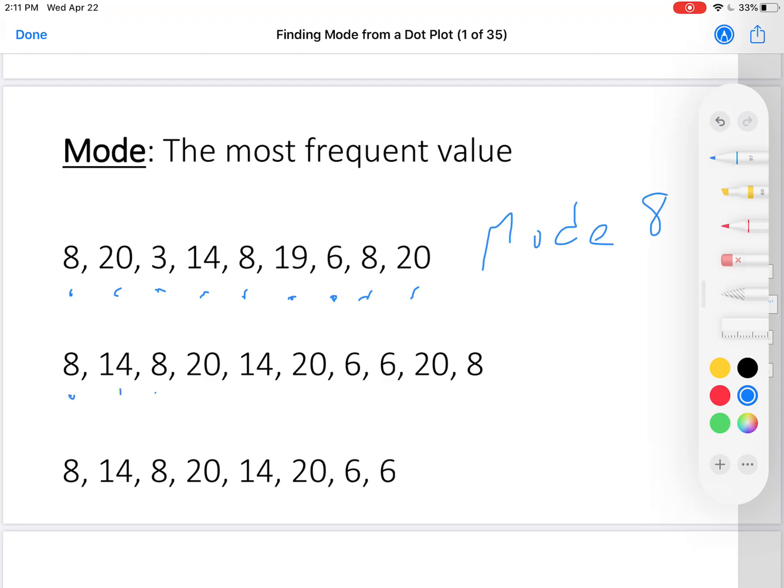Look at this second one. 8, 14, 8, 20, 14, 20, 6, 6, 20, 8. This time, there are two modes. 8 occurs 3 times. 20 also occurs 3 times. Therefore, this has two modes: 8 and 20. This is called bimodal. Bi meaning 2, modal meaning 2 modes.